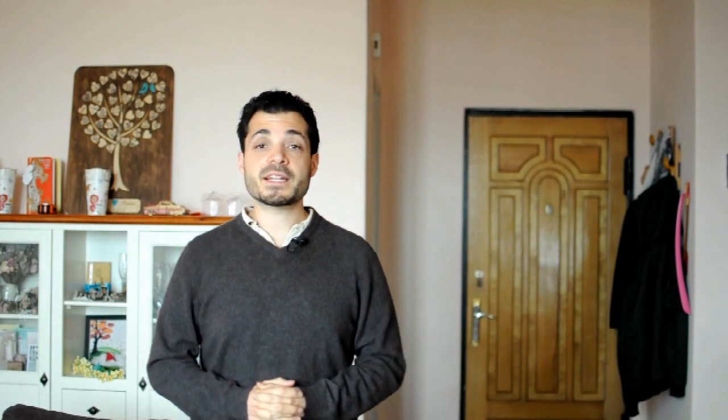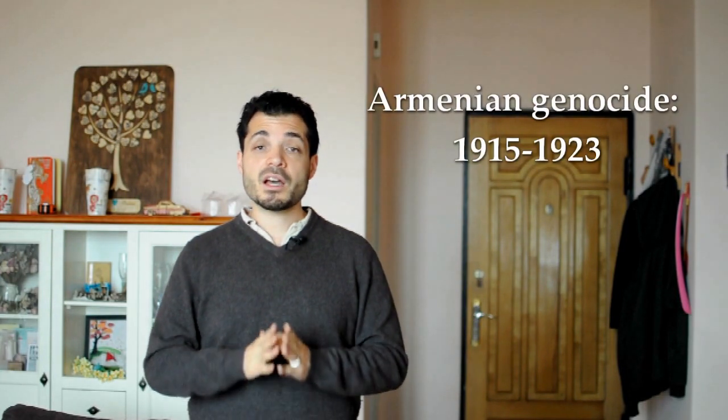That brings us to the first modern genocide — the one that really was at the cusp of the modern age — and that is the Armenian Genocide. Raphael Lemkin actually wrote the Genocide Convention due to what he saw in the events of the Armenian Genocide. Lemkin coined the term 'genocide' to describe those events. Prior to that, the best term we had — also coined to describe the situation of Armenians — was 'crime against humanity.'